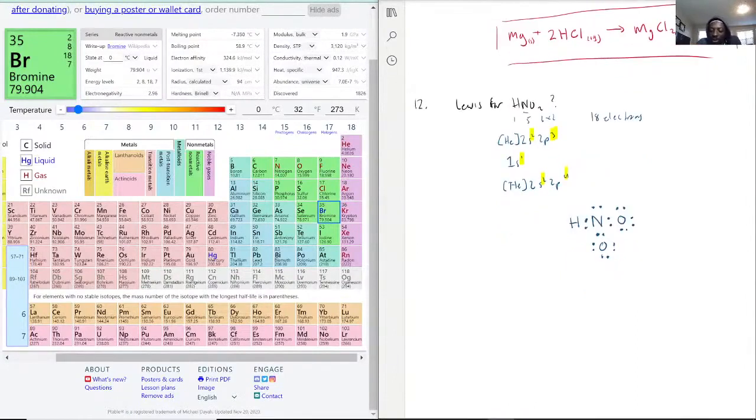With that being said, we have nitrogen at five valence electrons minus—we have one lone pair so that's two electrons plus six in a bond.